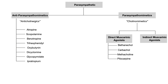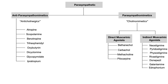Now let's conclude by talking about the indirect muscarinic agonists. These are acetylcholinesterase inhibitors — they inhibit the enzyme that normally breaks down acetylcholine, making more acetylcholine available, which means more parasympathetic, muscarinic, and cholinomimetic effect. The drugs are: neostigmine, pyridostigmine, physostigmine, rivastigmine, donepezil, galantamine, and edrophonium.